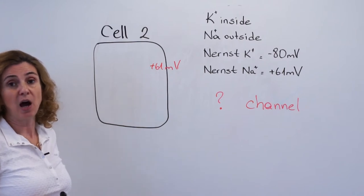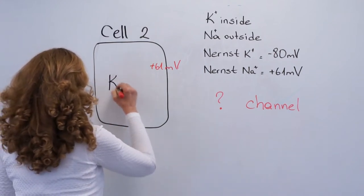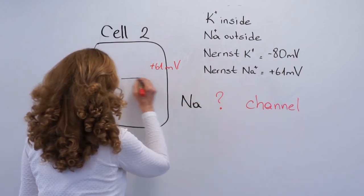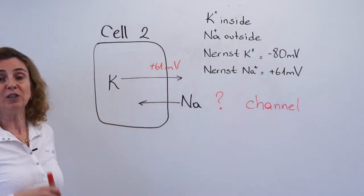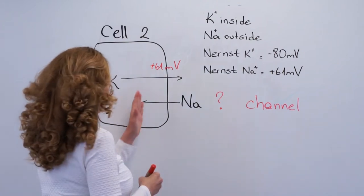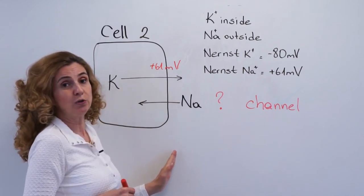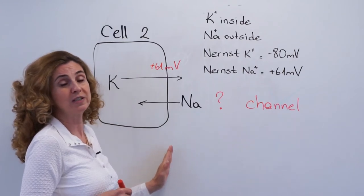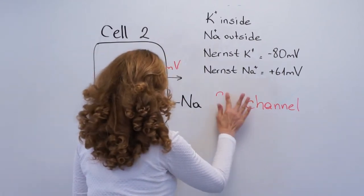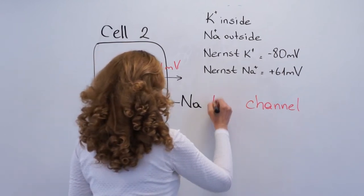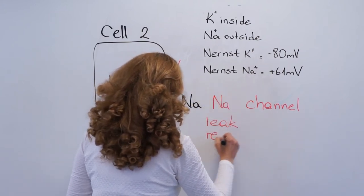These channels are producing the resting membrane potential. We always have high potassium inside and high sodium outside — chemical forces of potassium and sodium in different directions. But whichever ion has a channel on the membrane, that ion is going to try to bring the membrane potential towards its Nernst potential. So in cell two we can say that the cell membrane has only sodium channels, which are either called leak or resting channels.